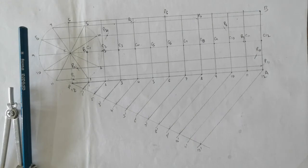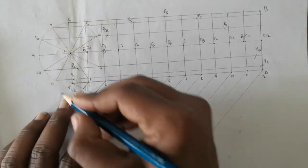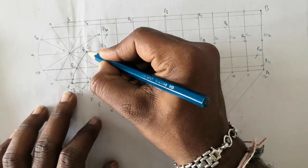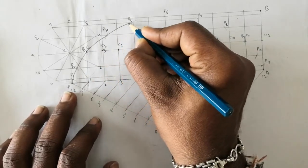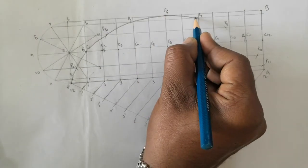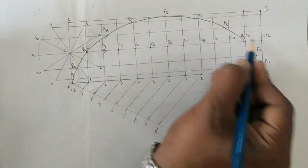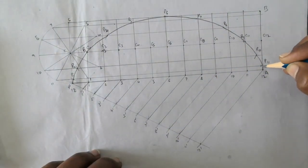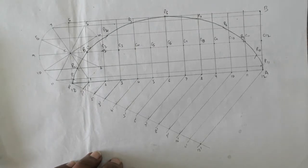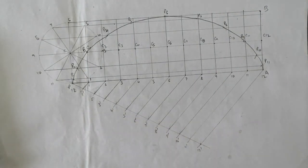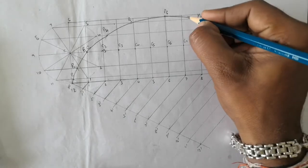You now have all the points: P, P1, P2, P3, P4, P5, P6, P7, P8, P9, P10, P11, and A (P12). Join them with a smooth curve — this complete curve is your cycloid.